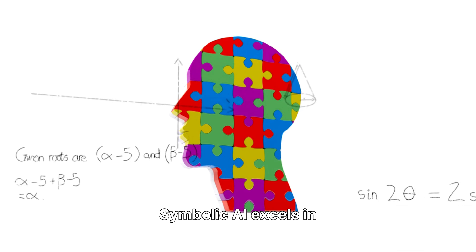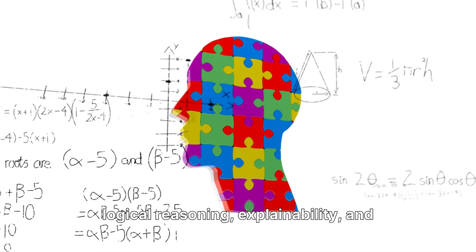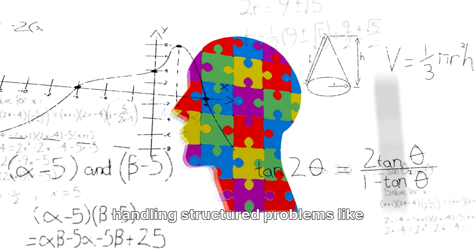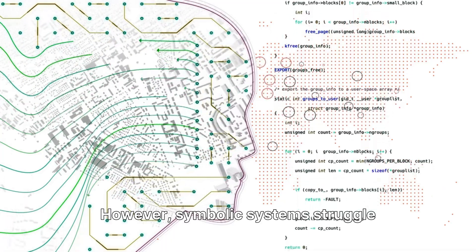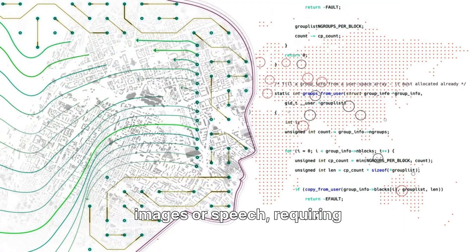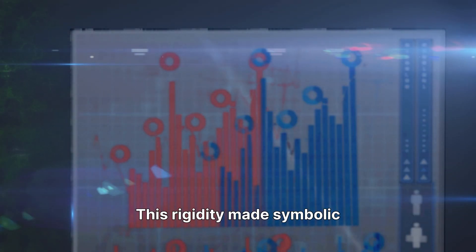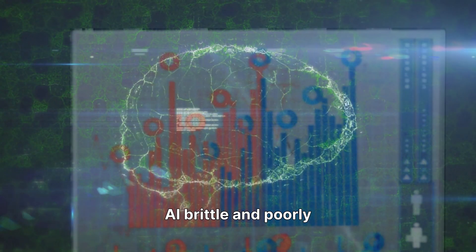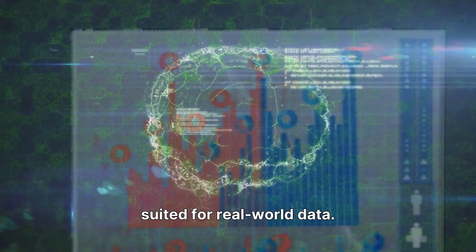Symbolic AI excels in logical reasoning, explainability, and handling structured problems like mathematics. However, symbolic systems struggle with unstructured data like images or speech, requiring manual programming. This rigidity made symbolic AI brittle and poorly suited for real-world data.